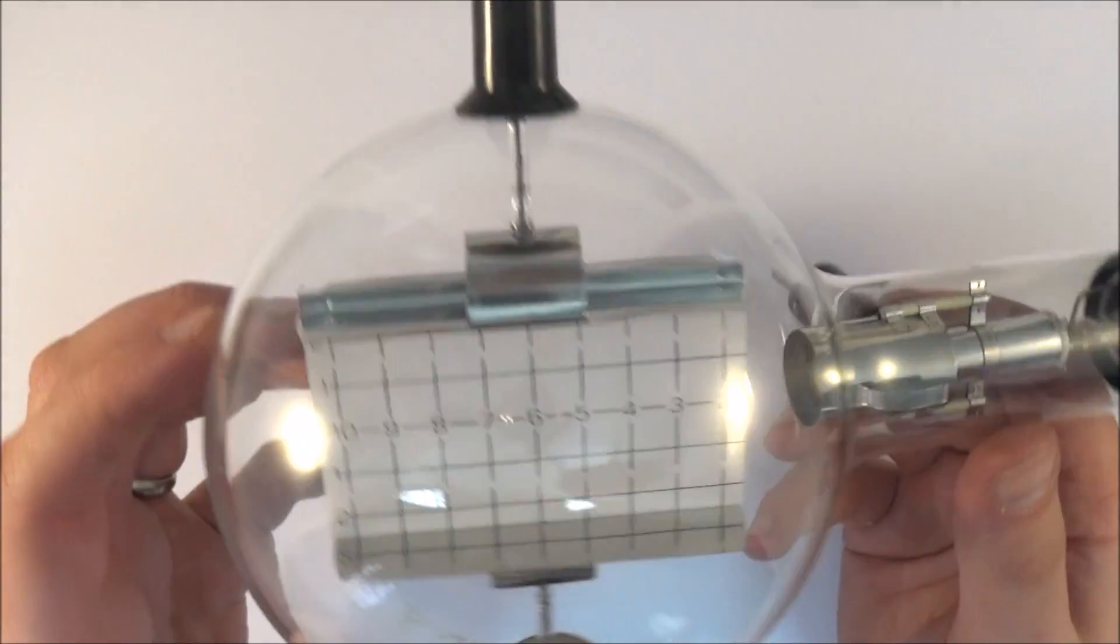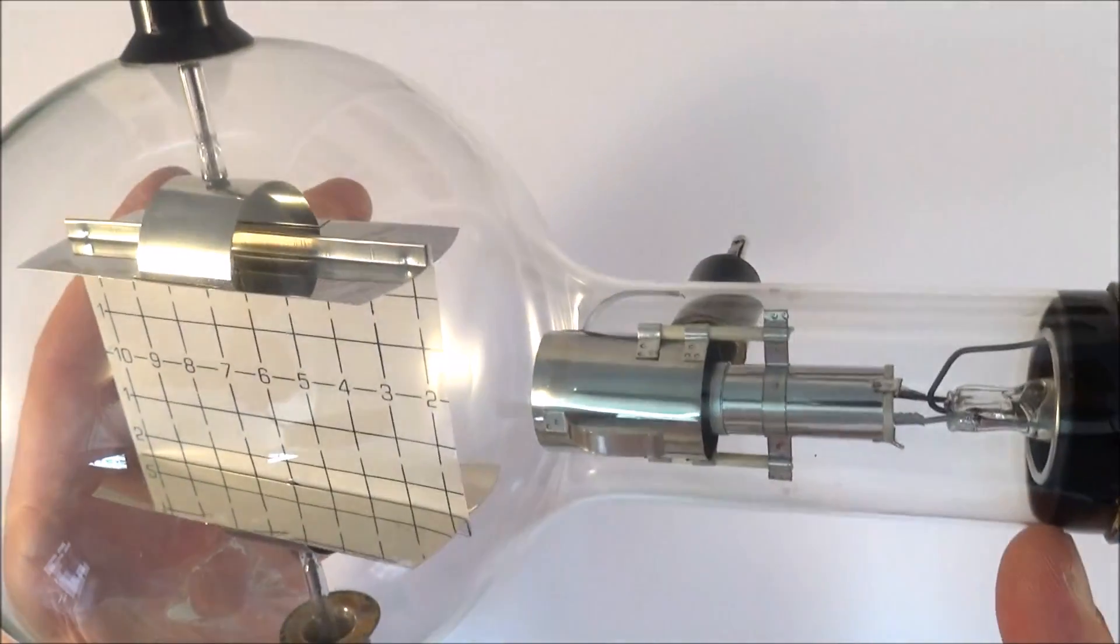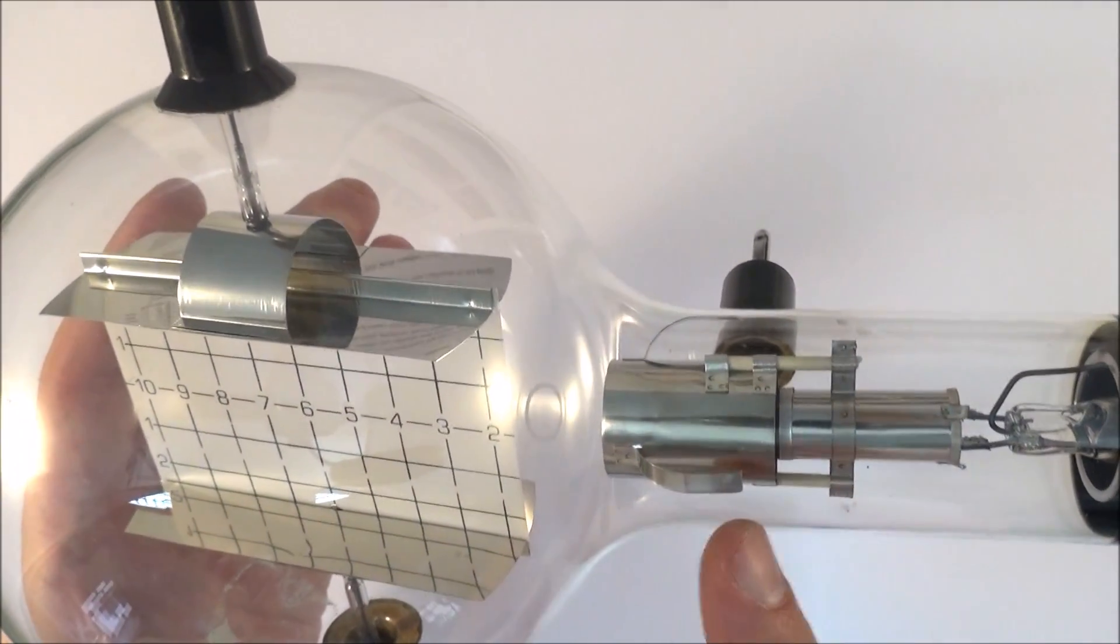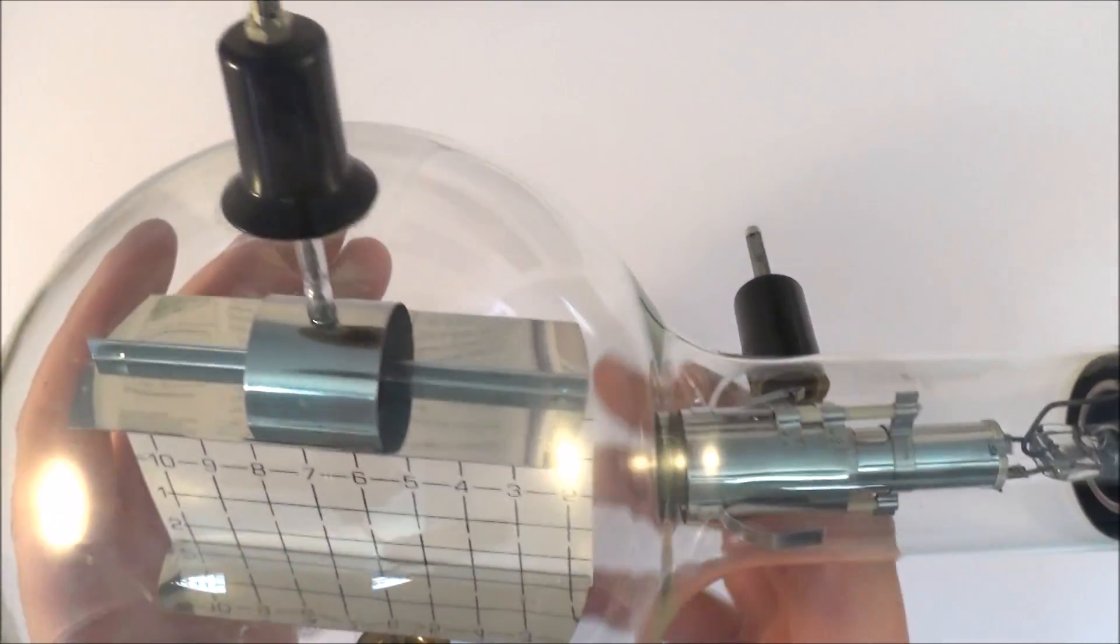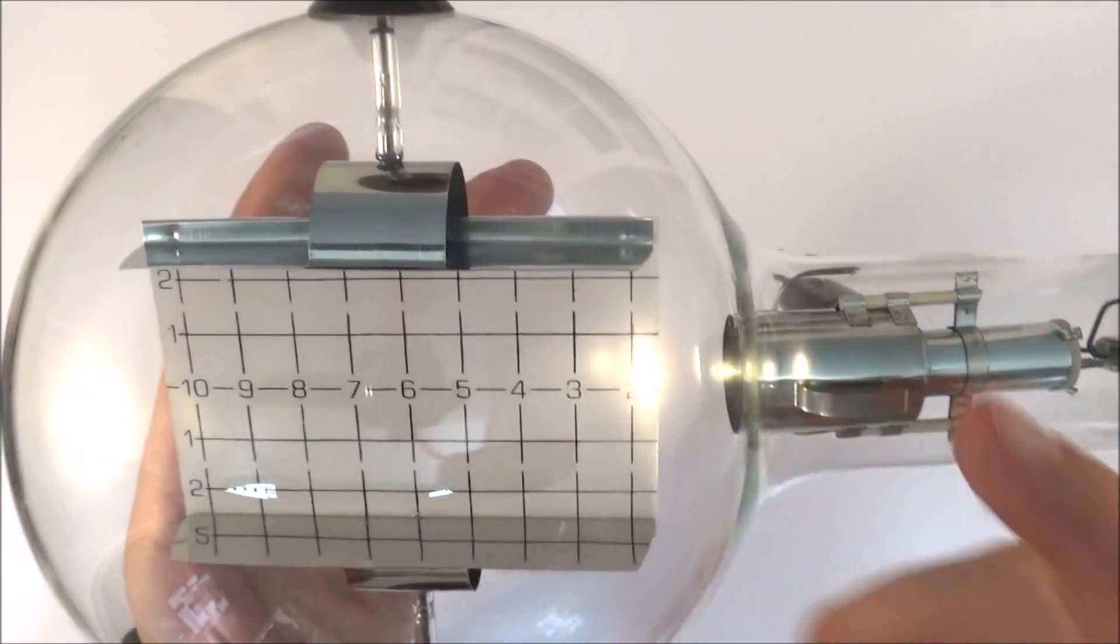This next tube here is called a deflection tube. Again we have thermionic emission of electrons at this end. We accelerate them through an electric field but the bit we're really interested in is this part over here.